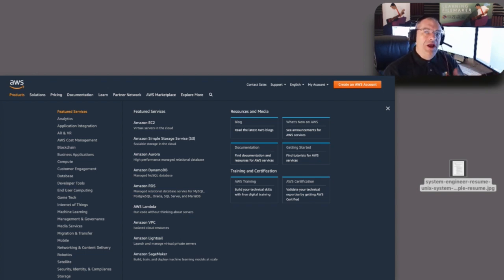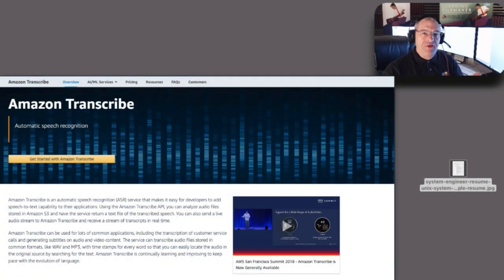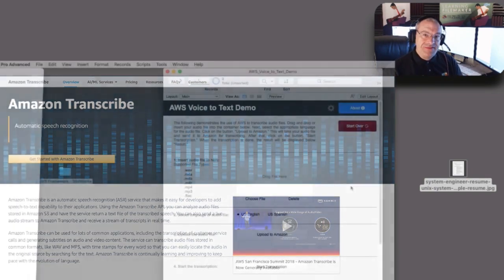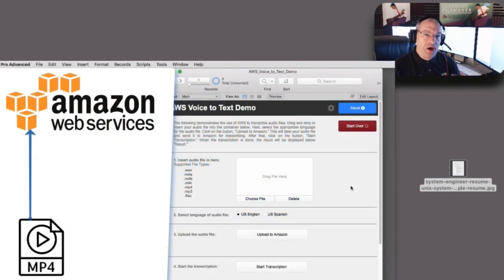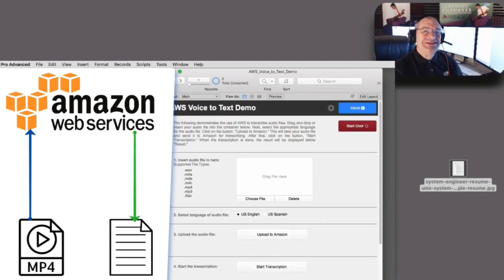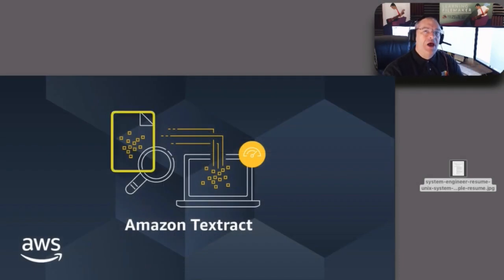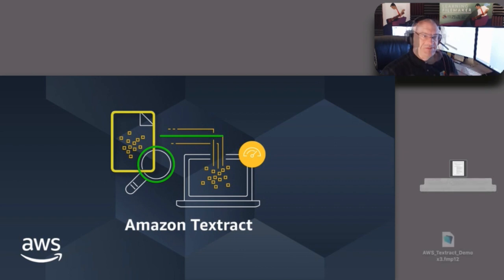In other videos we have, we talk about AWS in terms of taking an audio file — a spoken file — and getting a text dump of that audio. This is a very similar sort of demo, except this is the classic OCR, where it's going to take a scanned document, optically read it, and give us text.